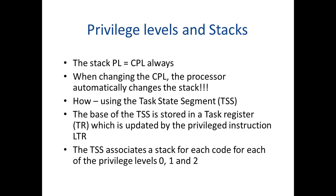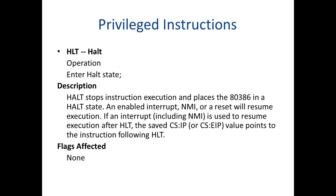The privilege instruction HLT (halt) stops instruction execution and places the 80386 in a halt state. Whenever the HLT instruction executes, it stops execution of all instructions and places the 80386 in a halt state. By enabling interrupts, an NMI (non-maskable interrupt), or a reset, execution will resume. If an interrupt is used to resume execution after HLT, the saved CS:IP values point to the instruction following HLT. None of the flags are affected by this instruction.